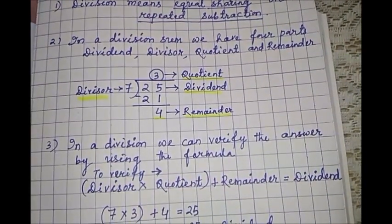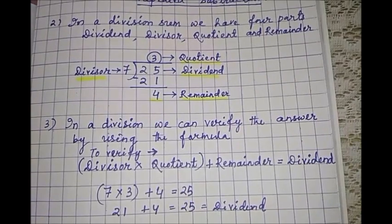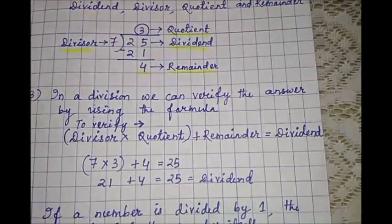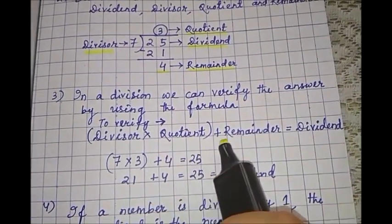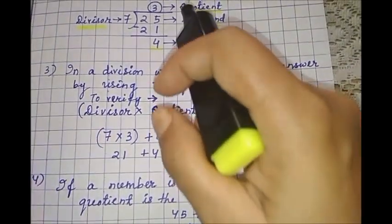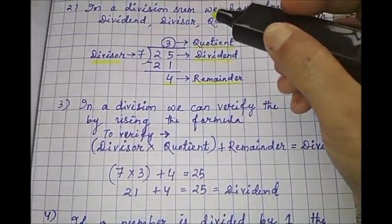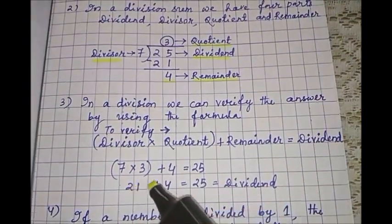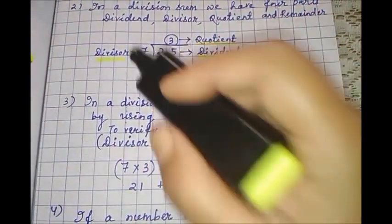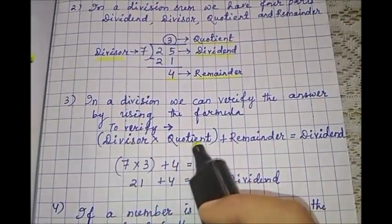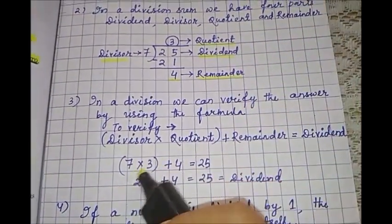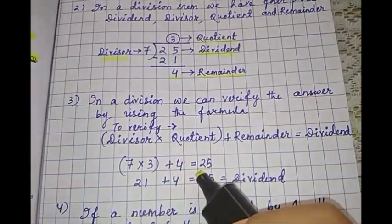In a division, we can verify the answer by using the formula. What is the formula? This also you know in class 2. Divisor multiplied by quotient plus remainder equals dividend. Suppose in this example, what is the quotient you got? Sorry, quotient you got 3 and divisor is 7. So divisor is 7 multiplied by quotient 3 plus remainder 4.